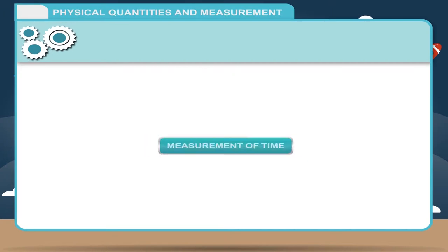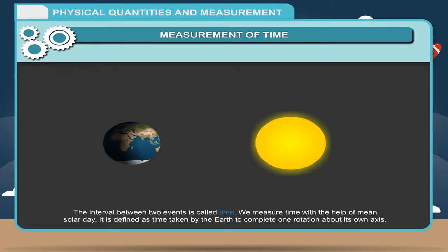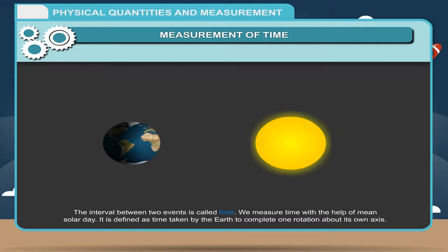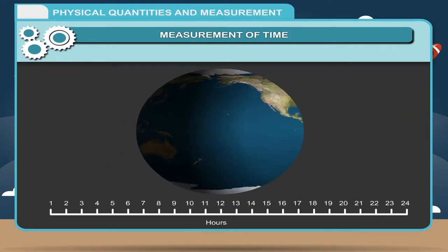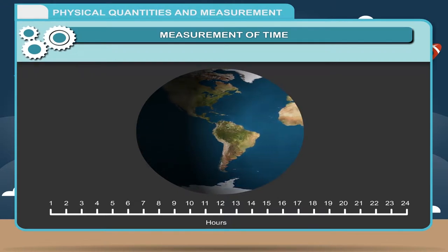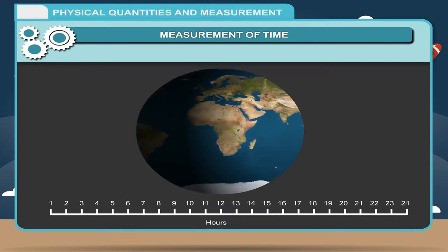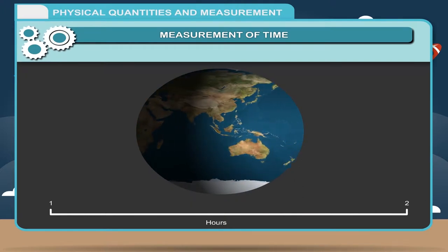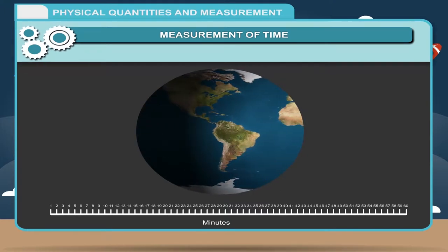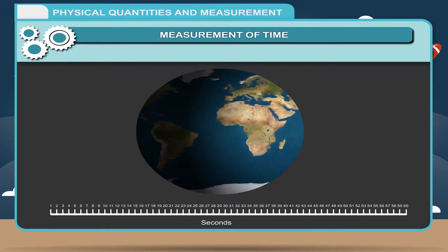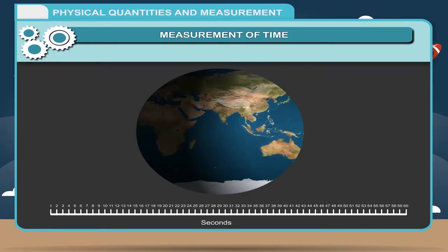Measurement of Time: The interval between two events is called time. We measure time with the help of the mean solar day, which is defined as the time taken by the earth to complete one rotation about its own axis. The mean solar day is divided into 24 equal intervals, each called an hour. One hour is further divided into 60 equal parts, each called a minute. One minute is further divided into 60 equal parts, each called a second.